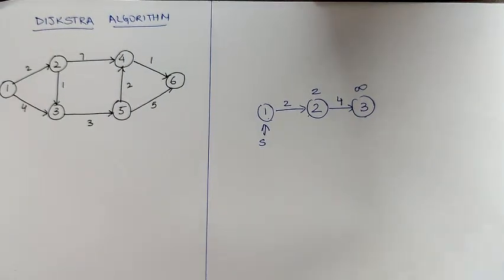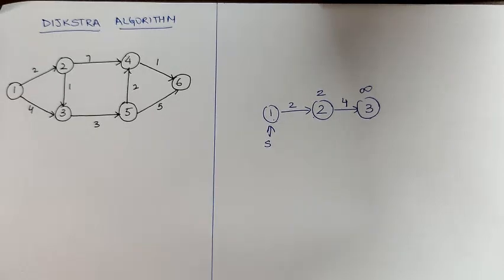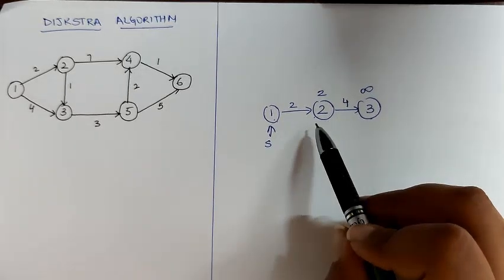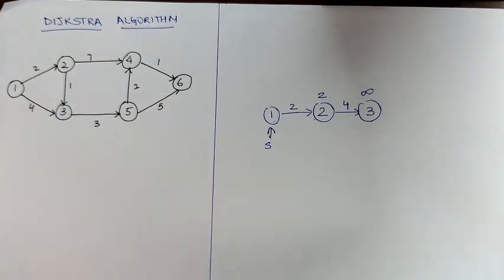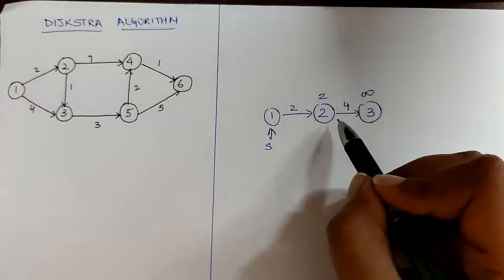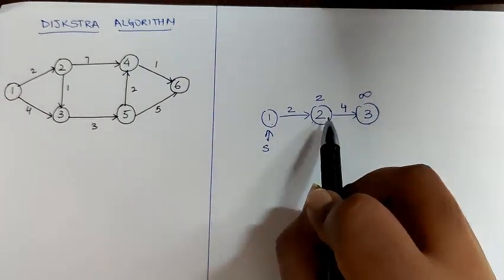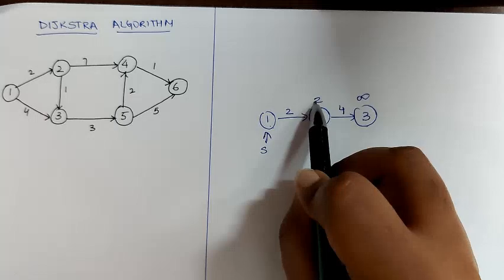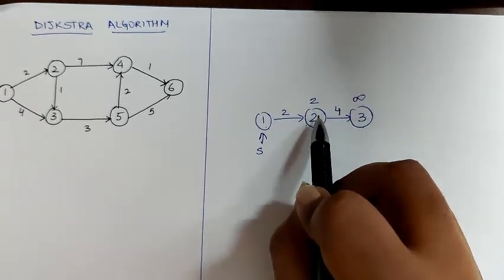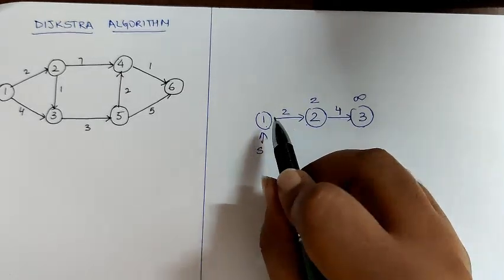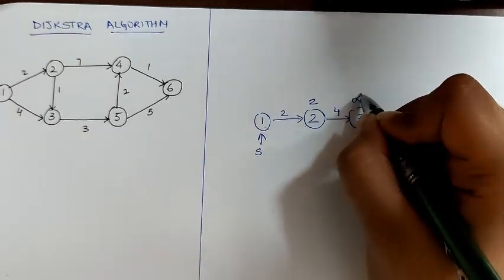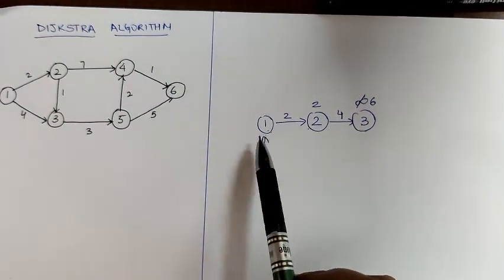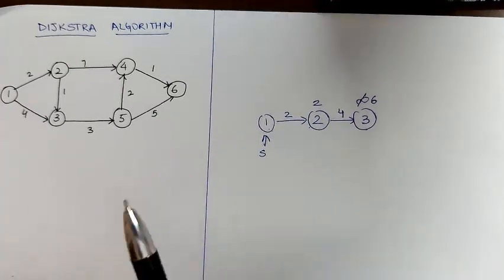Now, if we follow Dijkstra algorithm, we have to use the shortest path vertex. Dijkstra says that via that vertex, we have to check the shortest path to other vertices. So here there is no direct path from 1 to 3 but there is a direct path from 2 to 3. The cost of 2 is 2 and the distance from 2 to 3 is 4. So we can add them up and the distance from 1 to 3 can be modified to 6, which means there is a shortest path from 1 to 3 but it is not a direct path.